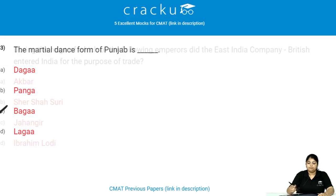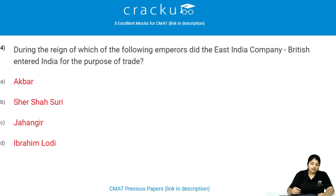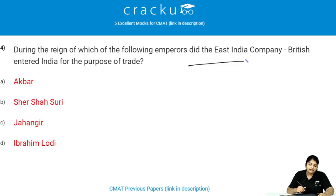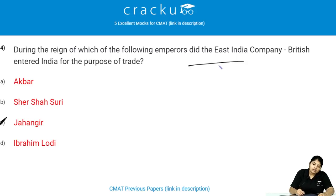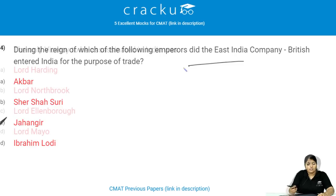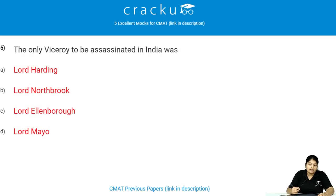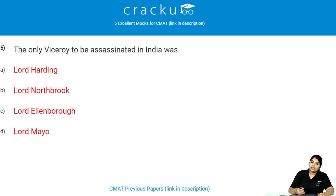During the reign of which of the following emperors did the East India Company enter India for the purpose of trade? It was during the reign of Jahangir that the East India Company entered India for the purpose of trade. The only viceroy to be assassinated in India was Lord Mayo.